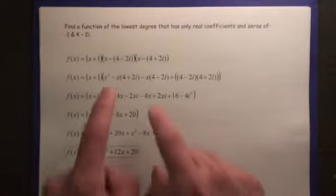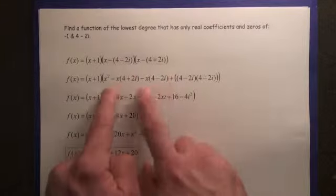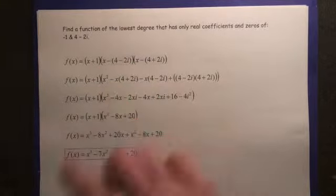Now here's the hard part. We're going to multiply these two binomials first, right here. Okay, we get x squared, there's your first term.